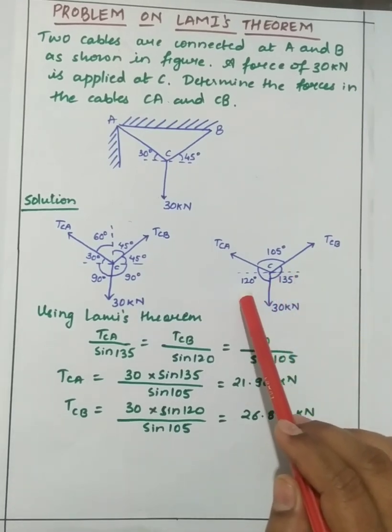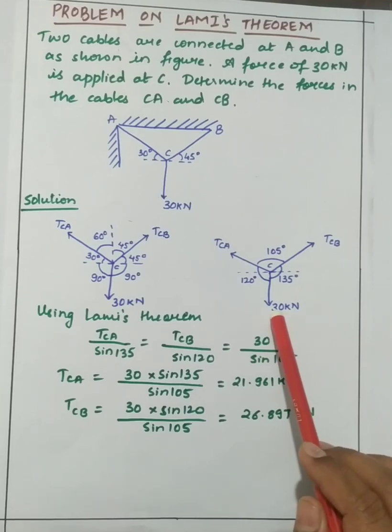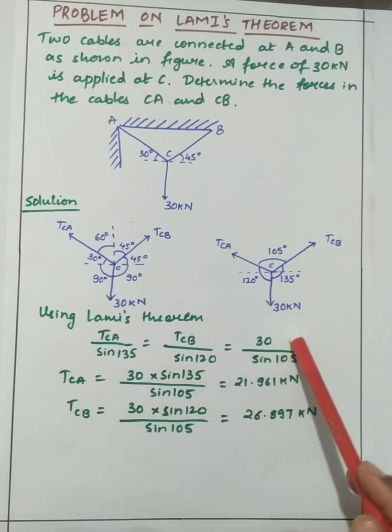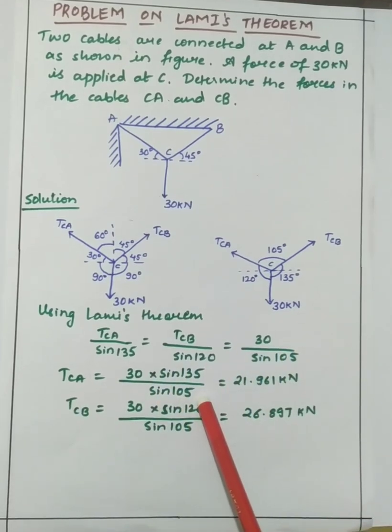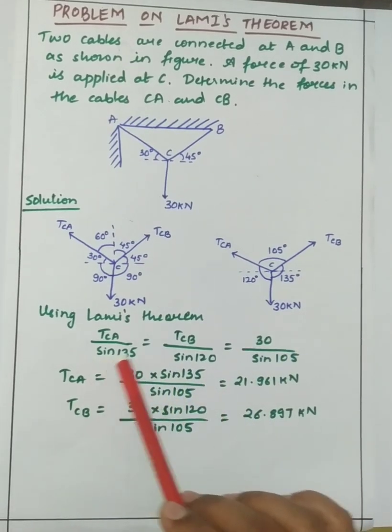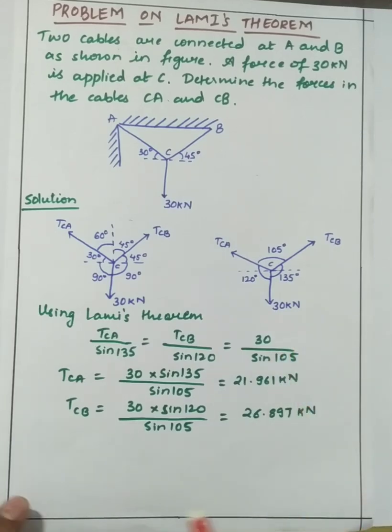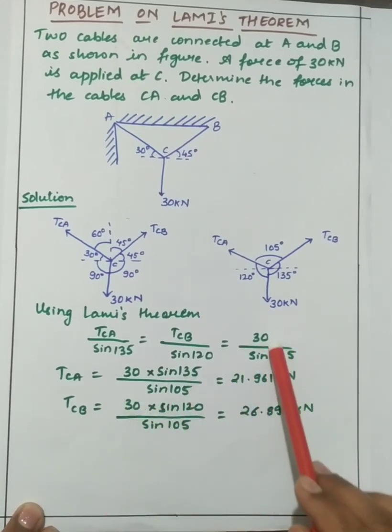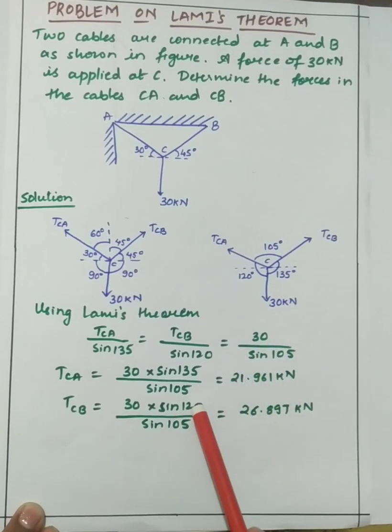So TCA equal to 30 by sine 105 into sine 120. TCA we get 21.961 kilo newton. TCB we get 26.897 kilo newton.